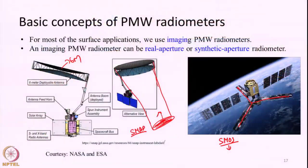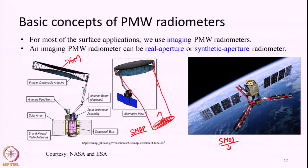In the last class I told you about real aperture radiometers and synthetic aperture radiometers, and as an example I showed you how data is collected by the SMAP satellite, which is an example of a real aperture radiometer, and SMOS satellite, which is an example of a synthetic aperture radiometer. For this particular lecture we will not discuss in detail how synthetic aperture radiometers work, as it is out of the scope of this course. We will just briefly take a look at the real aperture radiometer and its data collection, doing a quick recap of how SMAP collects data.